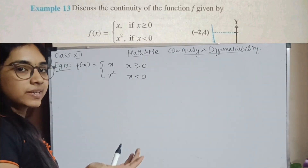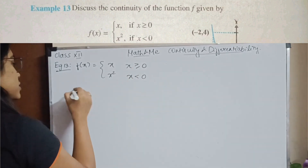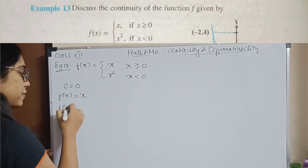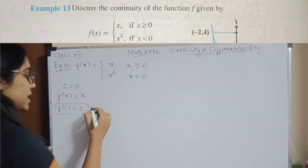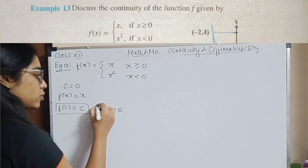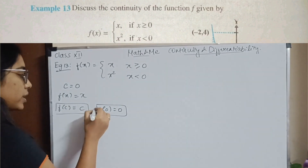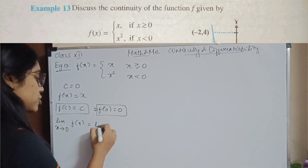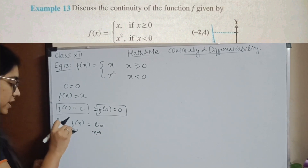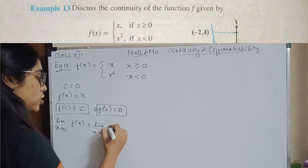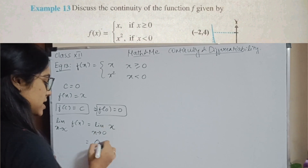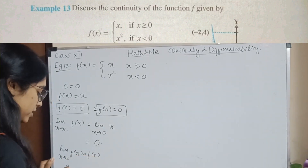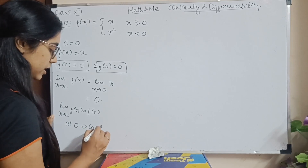Example 13. This is very similar to the previous example except now a condition at 0 is also given. When c is equal to 0, the one and only condition at 0 is f of x equals x. So f of c is c, and f of 0 is 0. The limit x tends to 0 of f of x — substituting, I get 0. So limit x tends to c of f of x equals f of c. At 0 the given function is continuous.